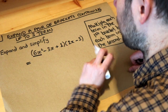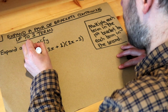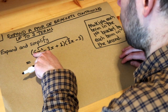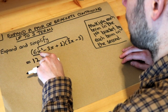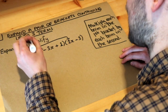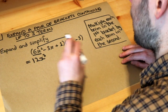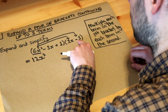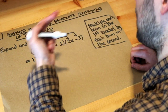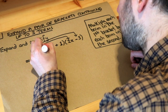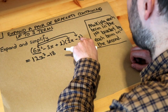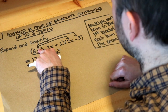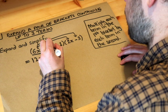I'm going to take this first term, the 6x², and multiply it by each of the things in the second bracket. First times first: 6x² times 2x — 6 times 2 is 12, and x² times x gives us x³, so that's 12x³. Then first times second: 6x² times minus 3 — positive times negative is negative, 6 times 3 is 18, so it's minus 18x².